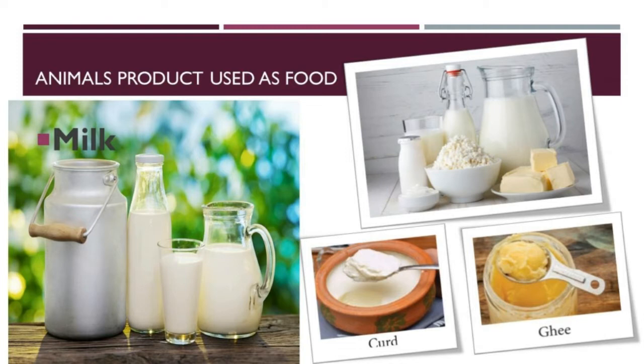Animal products used as food. First, we are going to learn about milk. Milk is a white liquid food produced by the mammary glands of mammals. It is the primary source of nutrition for infant mammals. Milk is the daily essential product obtained from animals like cows, buffaloes, goats, and camels. It is used in our daily diet to prepare tea, coffee, ice creams, chocolates, sweets, and other related products. Highly nutritive foods containing protein and calcium are made from milk, like paneer, cheese, cream, butter, ghee, and curd.